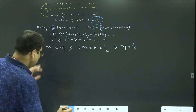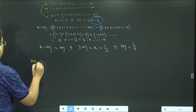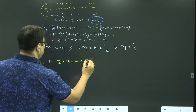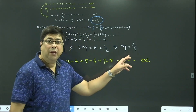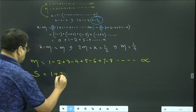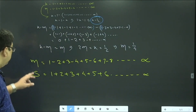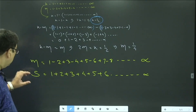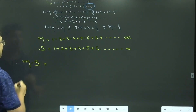Now, M = 1 - 2 + 3 - 4 + 5 - 6 + 7 - 8 + ... = 1/4. Our target is S = 1 + 2 + 3 + 4 + 5 + 6 + ... up to infinity. Let us compute M - S by subtracting element to element.